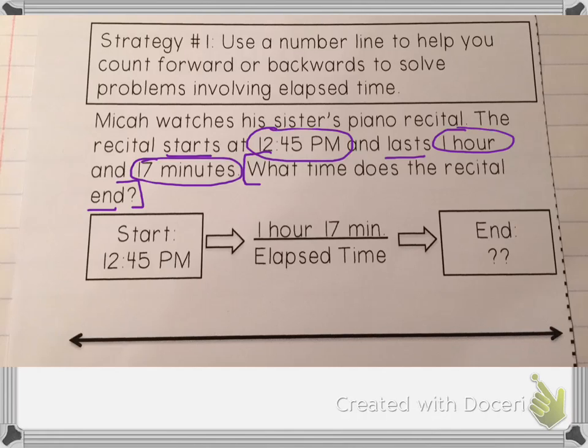We can use the number line to help us. I'm going to put 12:45 over here at the beginning. I know it goes for 1 hour and 17 minutes, so I'm going to start by making a 1 hour jump. I know that 1 hour later is going to be 1:45. If the minute hand goes all the way back around, it's going to end up at 1:45 again. So that is 1 hour.